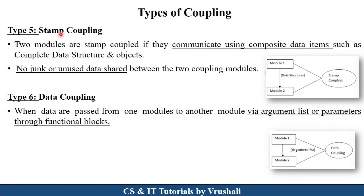The next type is stamp coupling. In a particular project with two modules — module one and module two — module two accesses all the data structures and algorithms used in module one. They handle and communicate using composite data items such as different data structures, objects, and algorithms. This is called stamp coupling.